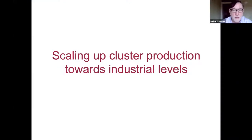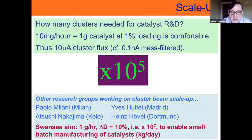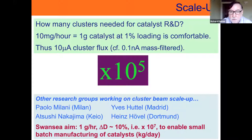Let me show you the method we are using to scale up cluster production towards industrial levels. We asked our colleagues in industry how much scale-up is needed, and to cut a long story short they said five orders of magnitude — ten to the power of five. A few groups are working in that space, and Paolo Milani in Milan and we ourselves are leading on it. Our new machine is designed for seven orders of magnitude scale-up — that would be a gram of clusters per hour. In catalysis terms where metal loading is normally 1%, that is 100 grams per hour and you can make a kilogram of catalyst in a day, which is sufficient for small-batch manufacturing of pharmaceuticals. Industrial production is within range.